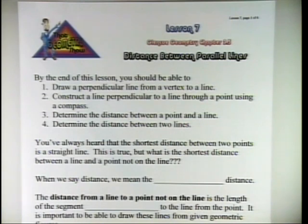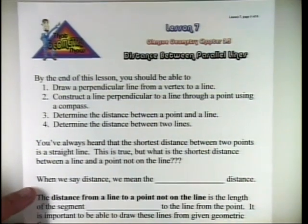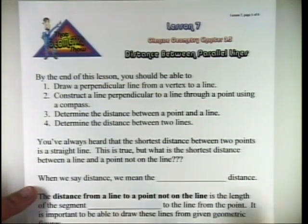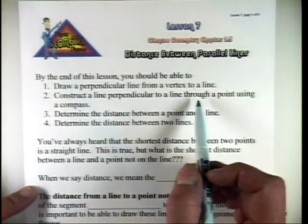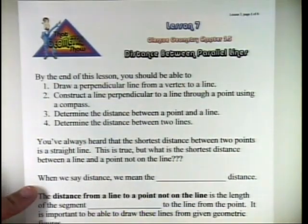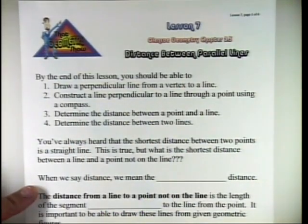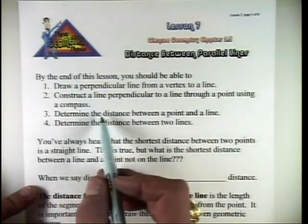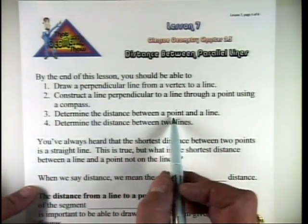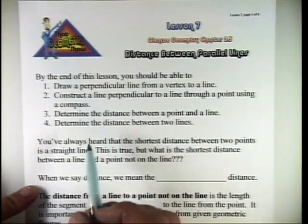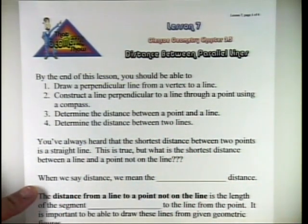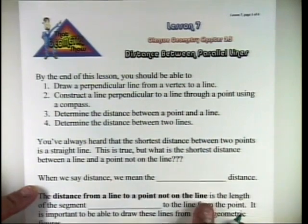By the end of this lesson, you should be able to: number 1, draw a perpendicular line from a vertex of a figure to another line; number 2, construct a line perpendicular to a line through a point using that pointy compass; number 3, determine the distance between a point and a line, and to find the distance between two lines. Let's get going.